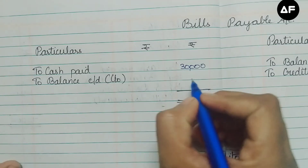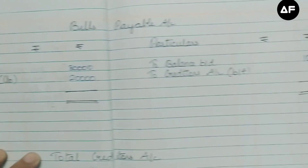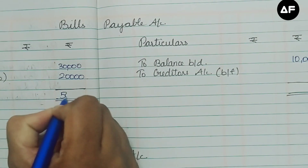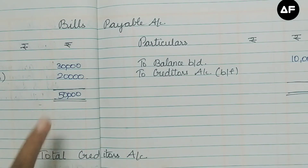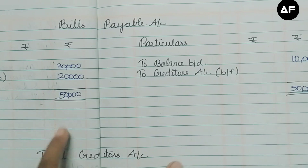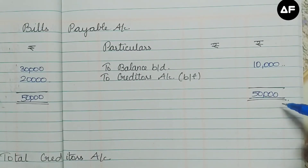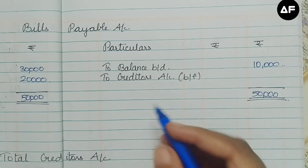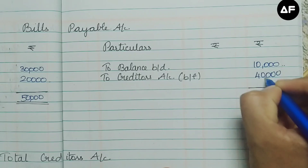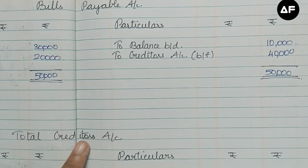The closing balance of bills payable is 20,000. Adding up both sides: the debit side totals 50,000 and the credit side totals only 10,000. So 50,000 is written as the grand total on both sides. Subtracting 10,000 from 50,000 on the credit side gives the bills payable balancing figure of 40,000, which must be transferred into the creditors account.